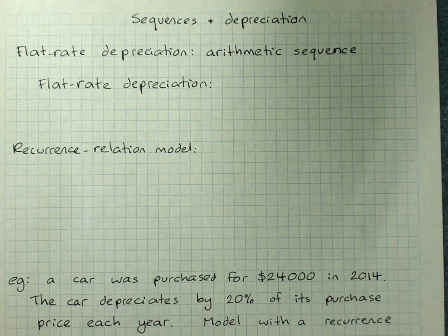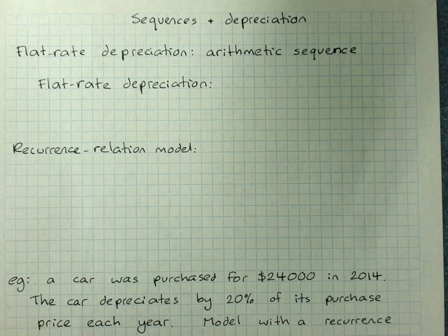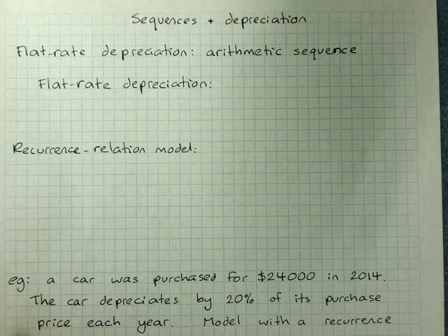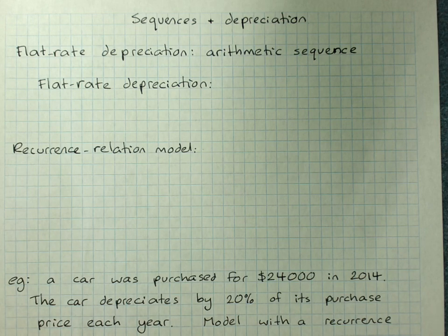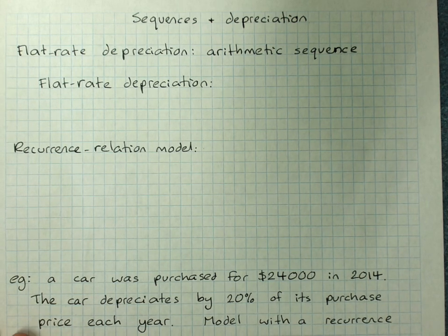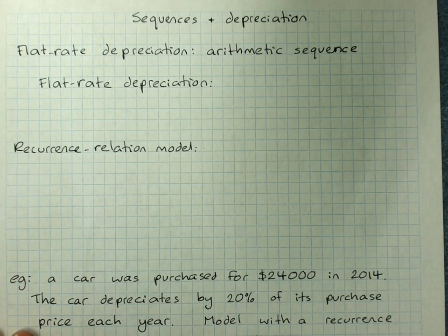Sequences and Depreciation. Depreciation is the reduction in value of an asset over time. It's especially important for businesses and in tax situations because the amount that an asset became worth less this year is a tax deduction in a lot of situations. The value of the item eventually gets down so low that it's considered to no longer be worth anything to the business — it's not an asset anymore, and at that point it's said to be written off.